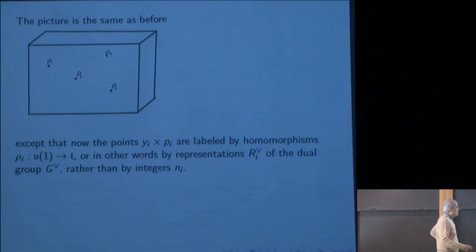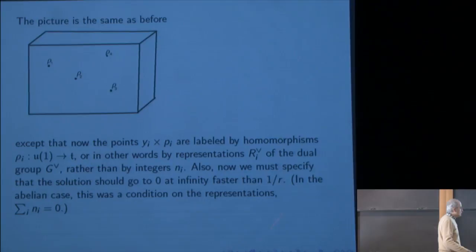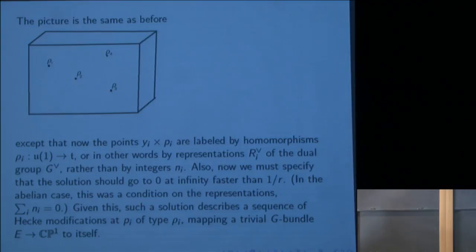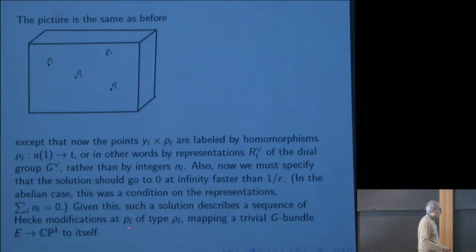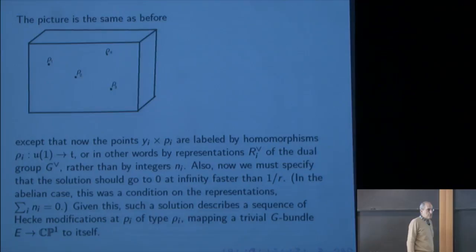The picture is the same as before, except now the points are labeled not by simple integers but by homomorphisms from U(1) to the maximal torus, or in other words by representations of the dual group. We also need to specify that the solution should go to 0 faster at infinity than 1/r — in the non-abelian case, this is a condition on the solutions. Given this, a solution describes a sequence of Hecke modifications of type ρ_i at p_i, mapping a trivial G bundle over CP^1 to itself.